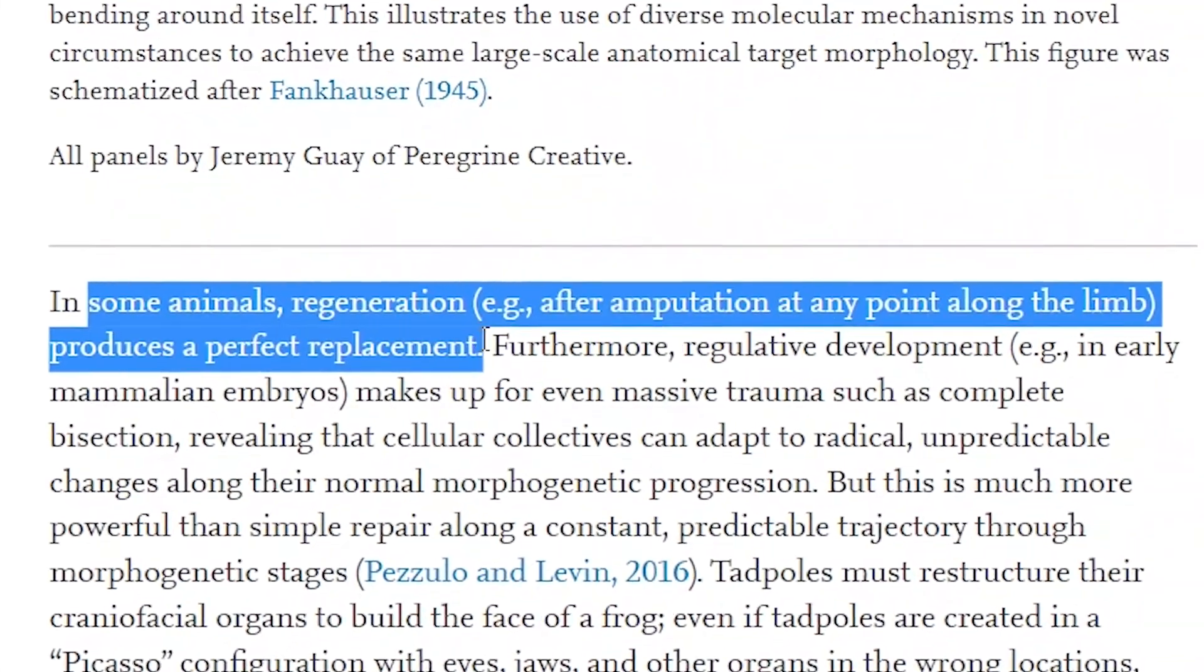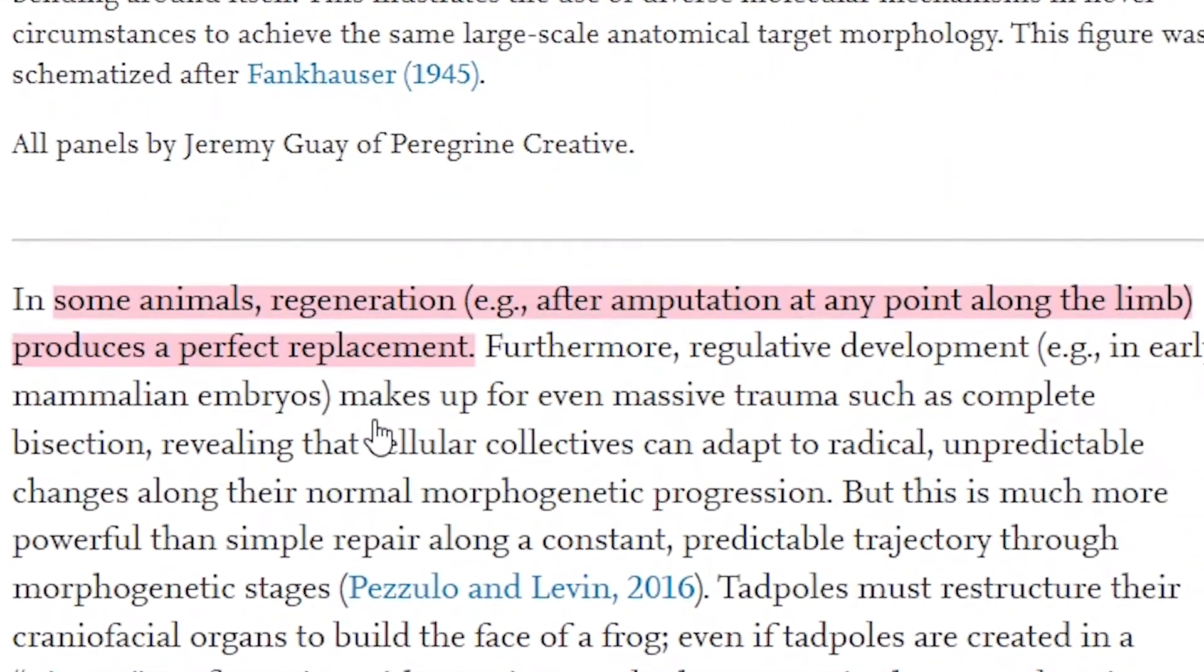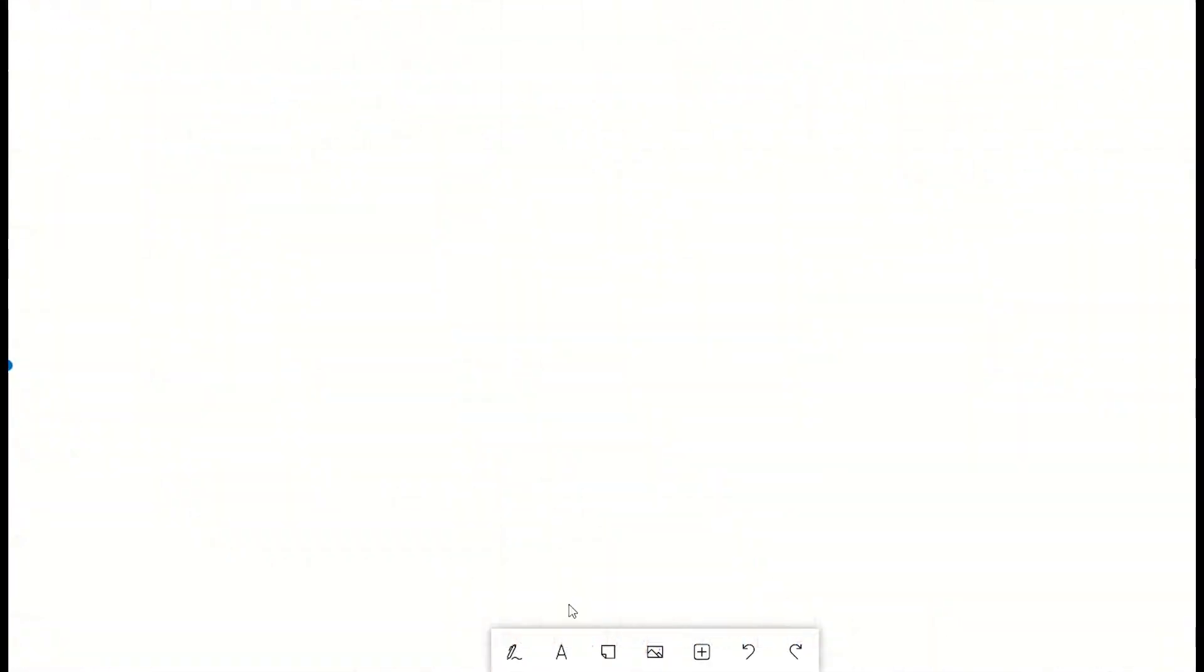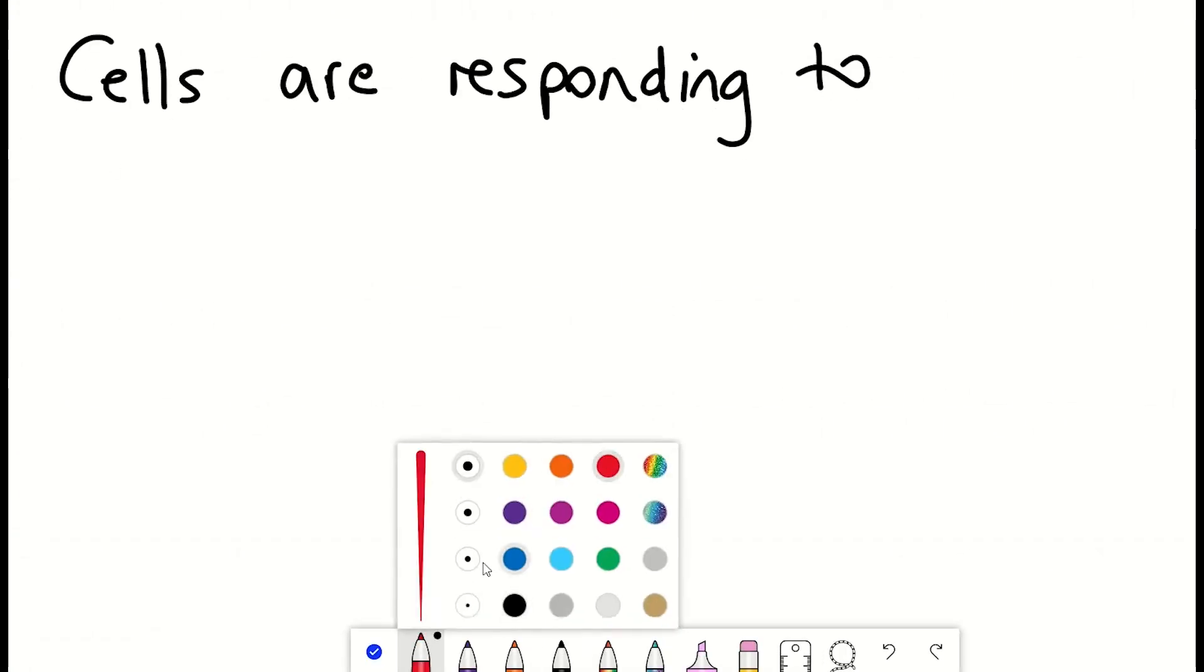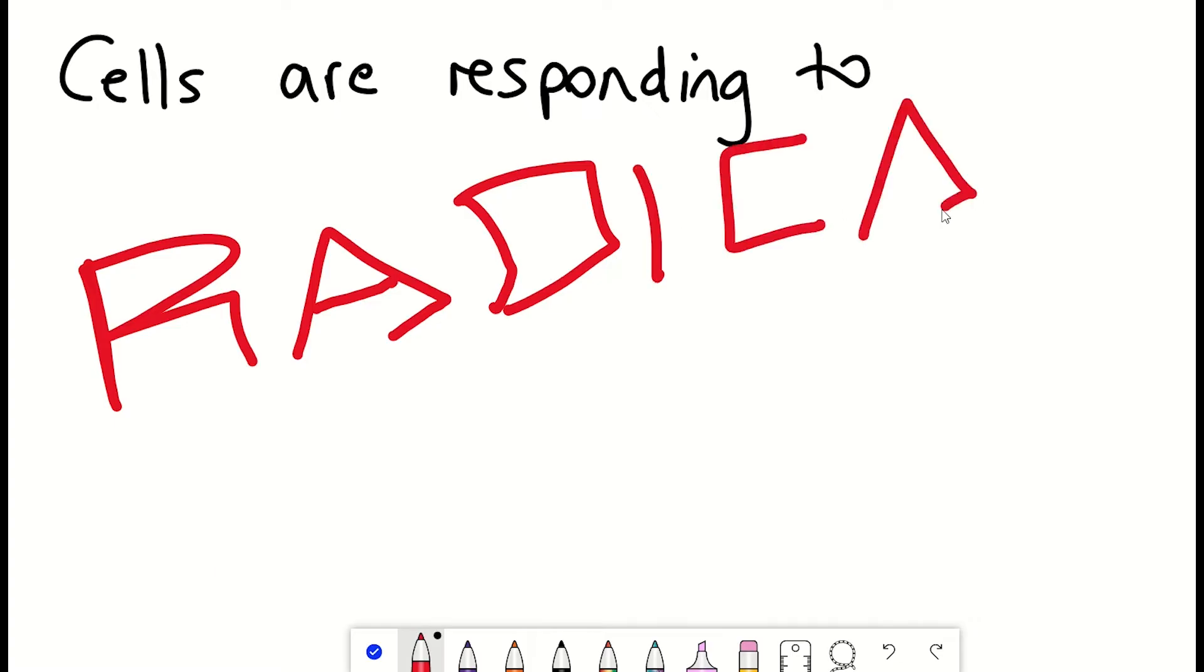It's absolutely madness when you think about it. Except it's not, because something is clearly going on, something that we should be able to understand. The cells are clearly adapting to some radical, unpredictable changes in their morphogenesis.